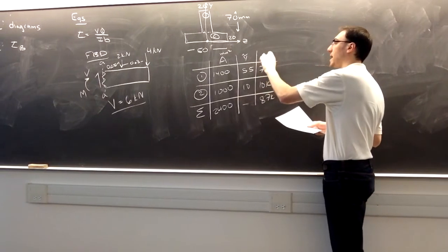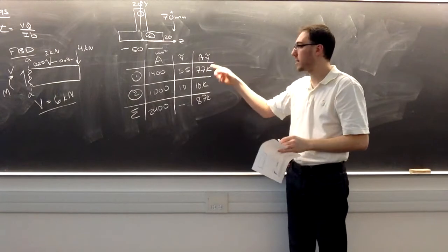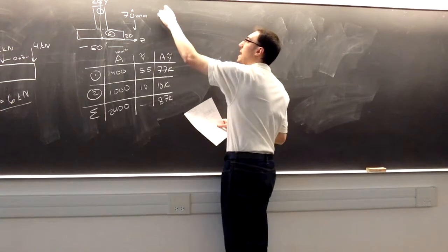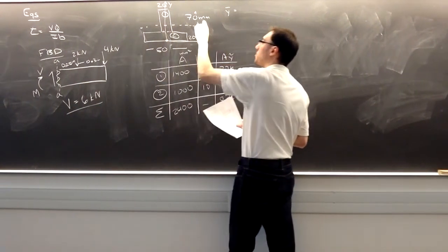And multiplying them together, I get 77,000 for shape one for the AY tilde. 10,000 for shape two for the total of 87,000. And I can use that then to find Y bar, because I need to know where the neutral axis is.